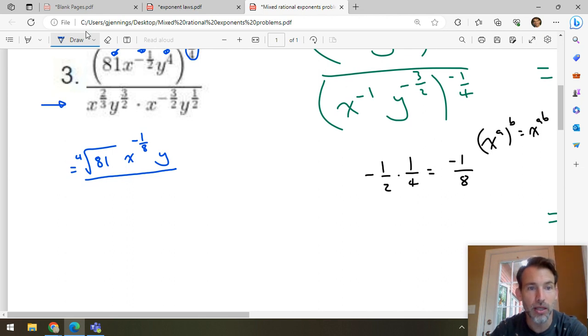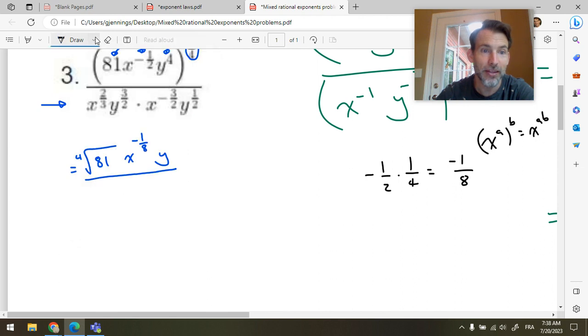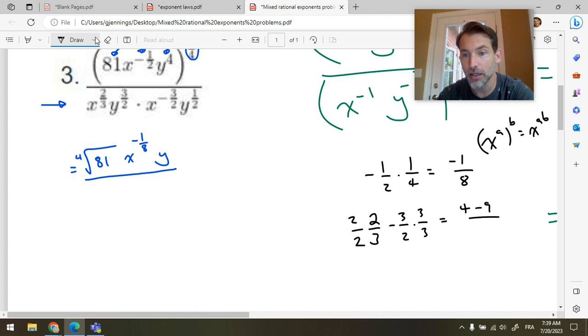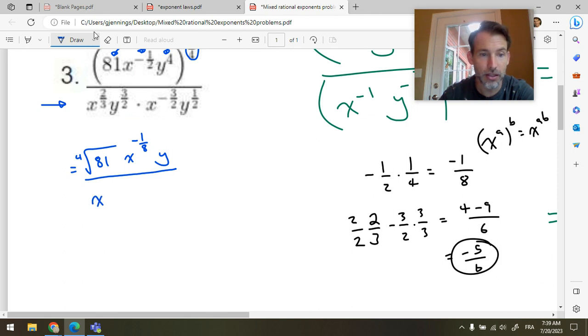Down here, we're multiplying powers of the same base. So, we add the exponents. Let's do some rough work on the side. X to the two thirds times X to the negative three halves. So, this is two over three minus three over two. Let's scale that up. And scale that up to get four minus nine over six. This is negative five sixths. So, we have as our final power of X on the denominator, X to the negative five sixths. Y to the three halves times Y to the one half is add the exponents Y squared.